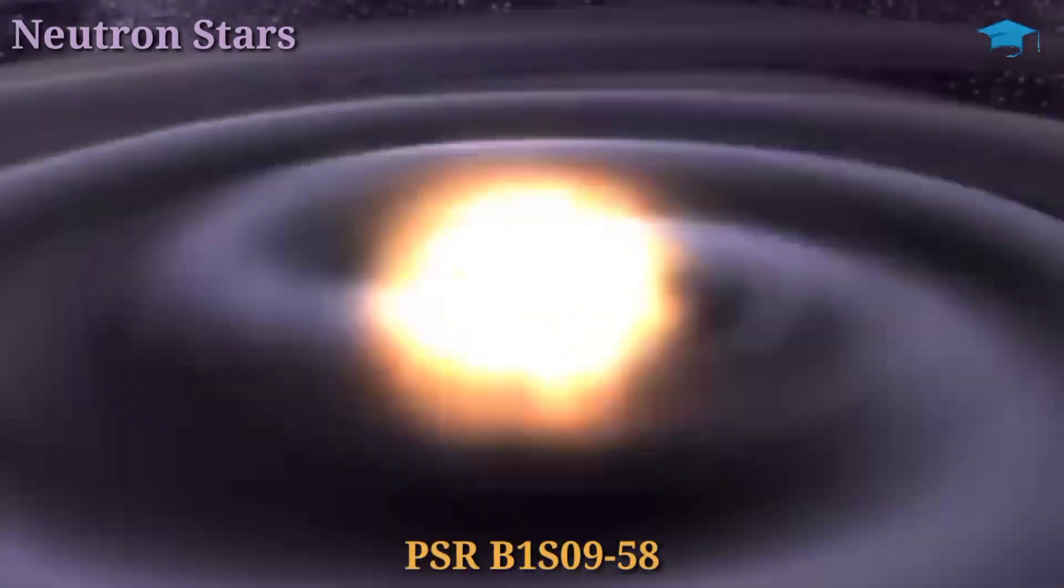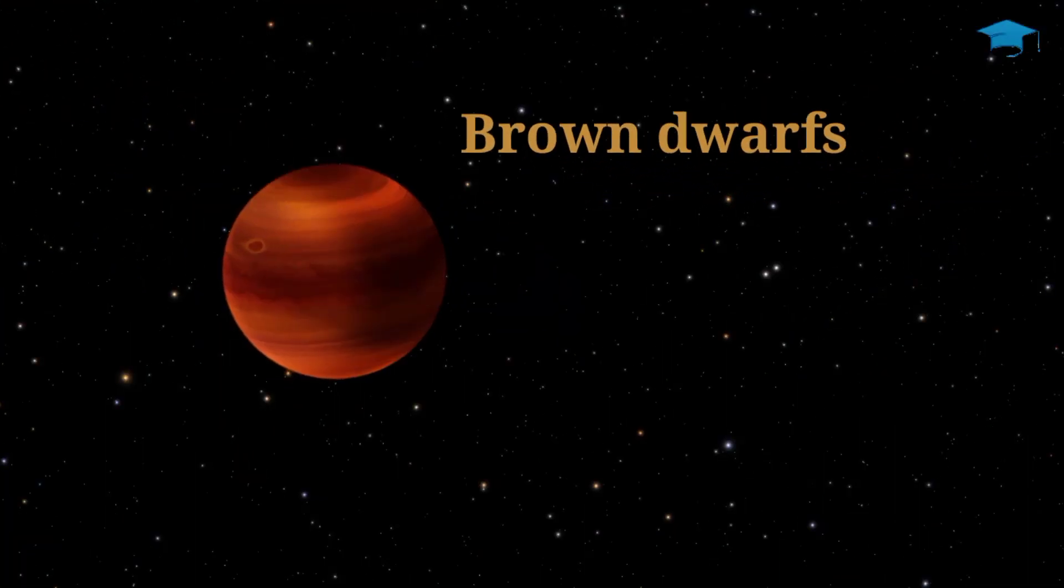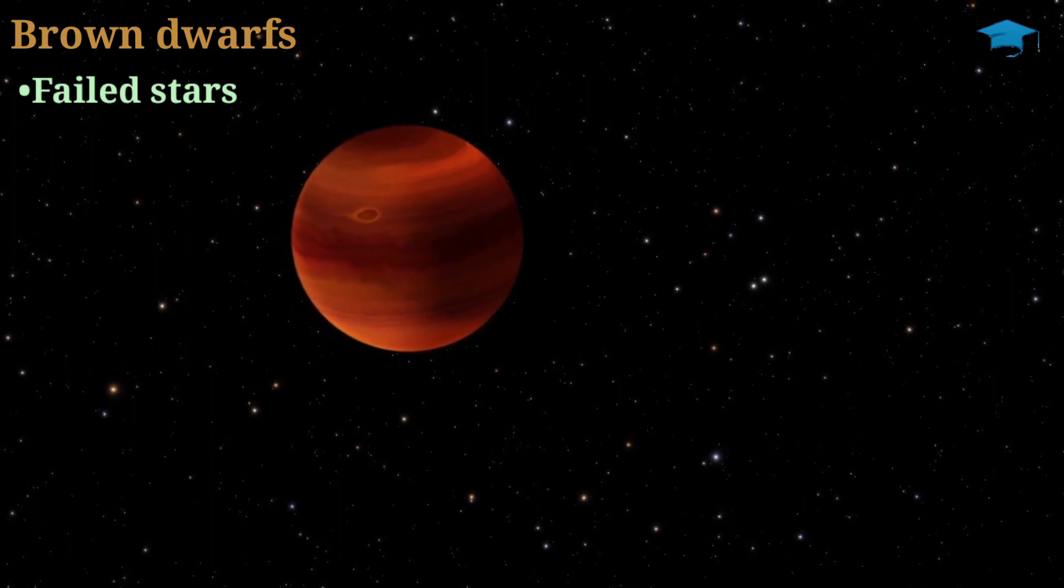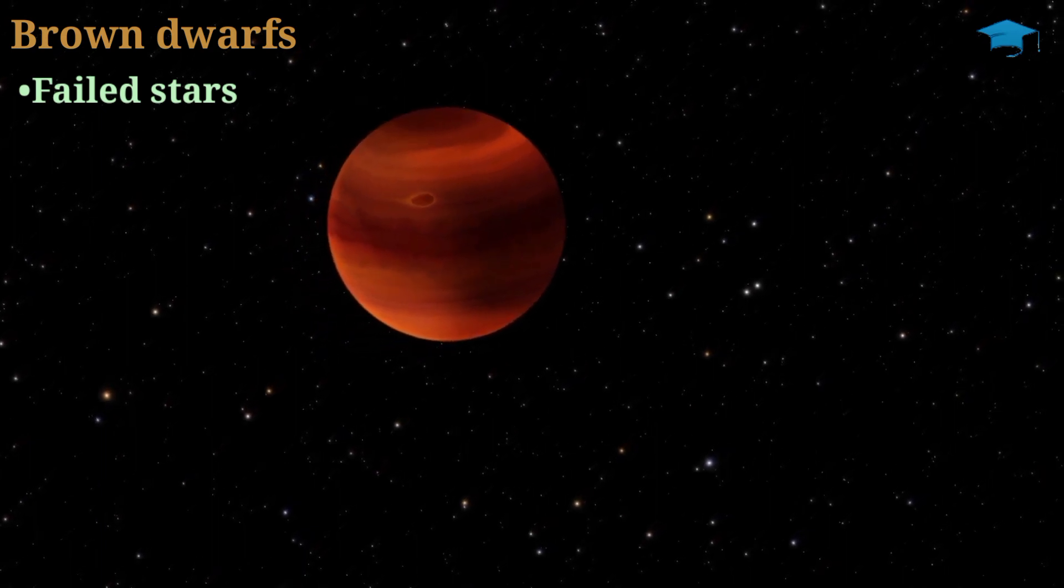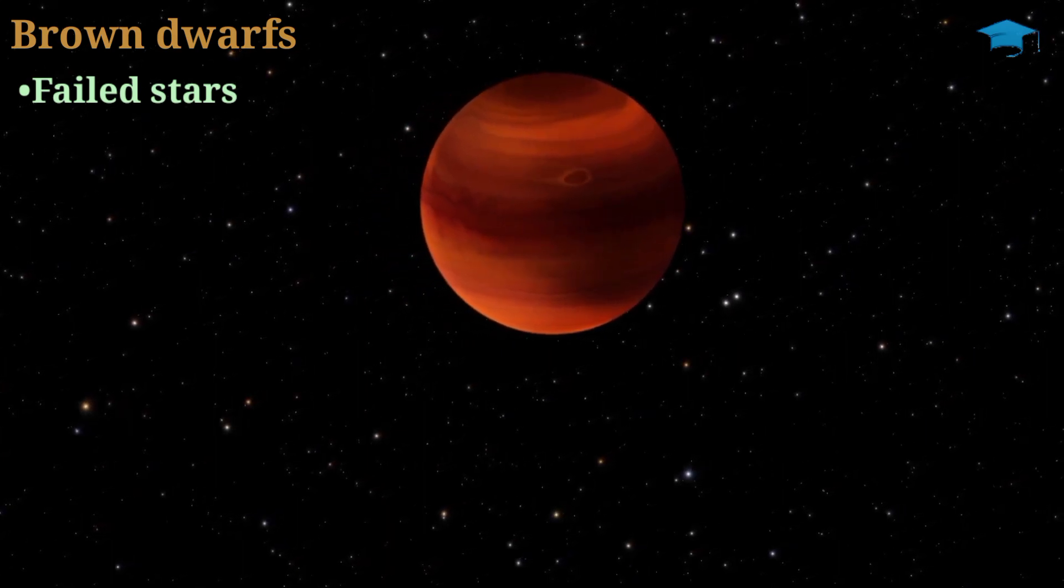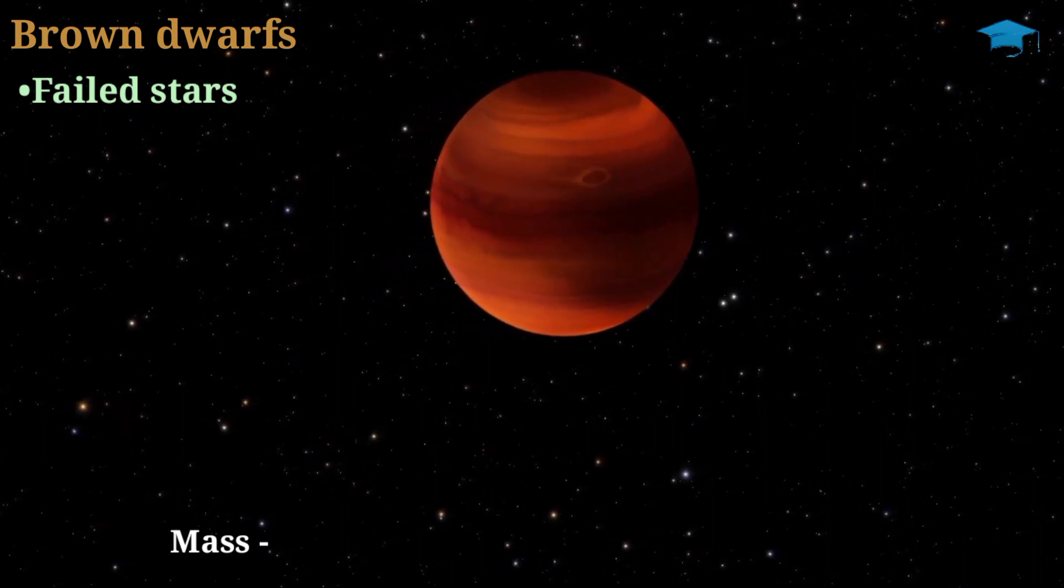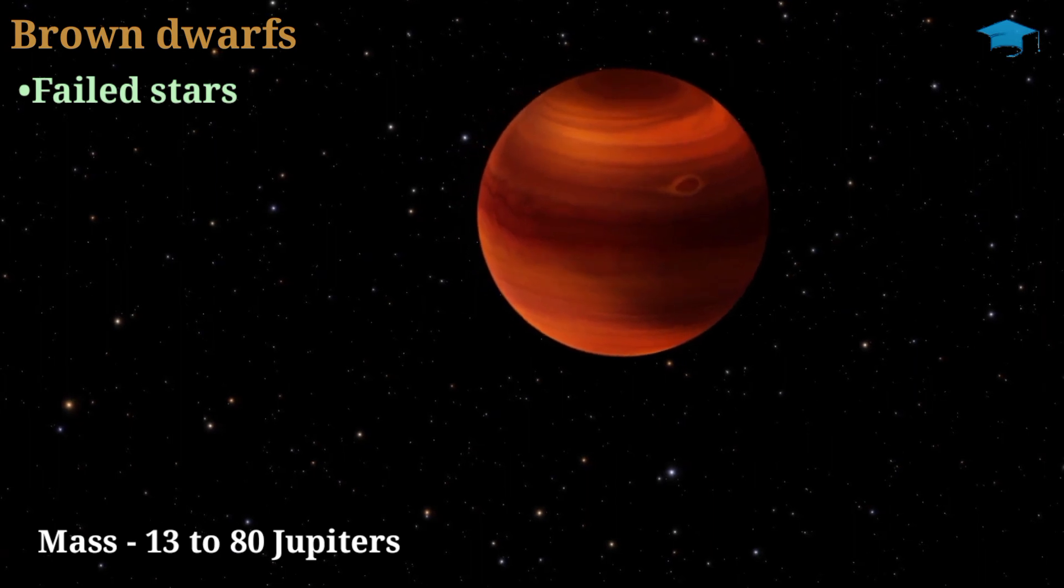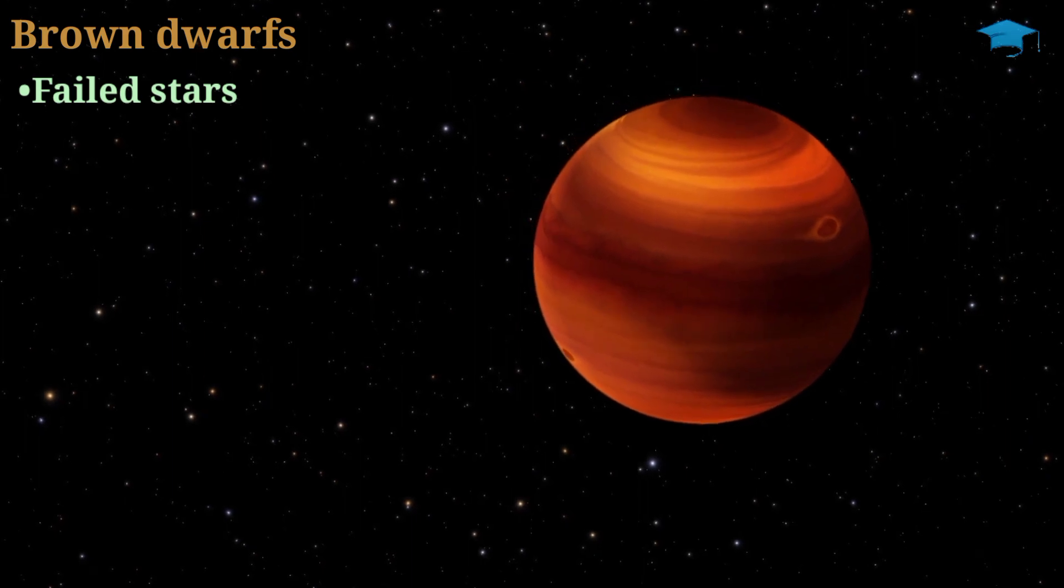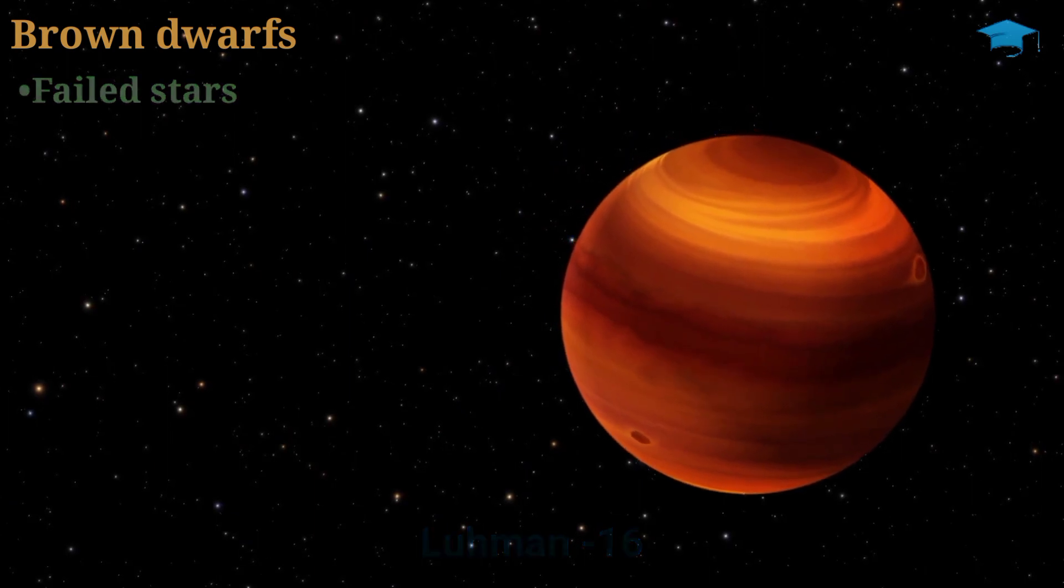PSR B1S0958 is an example of a neutron star. Now comes brown dwarfs. These stars are also considered as failed stars because these stars do not have sufficient mass to ignite hydrogen burning in their cores, that means the fusion of hydrogen, and therefore they do not shine and can be small. They have a mass range from 13 to 80 times that of the mass of Jupiter. We can place them between the sun and a big gaseous planet like our Jupiter. Luhman 16 is an example of brown dwarf.